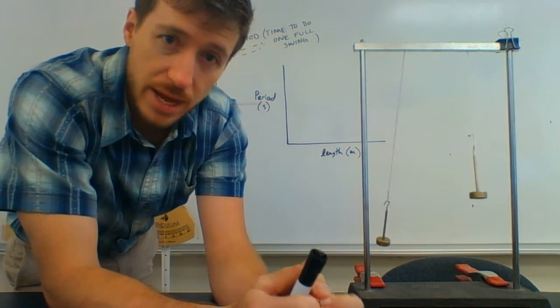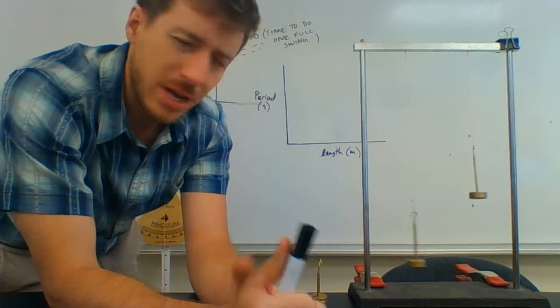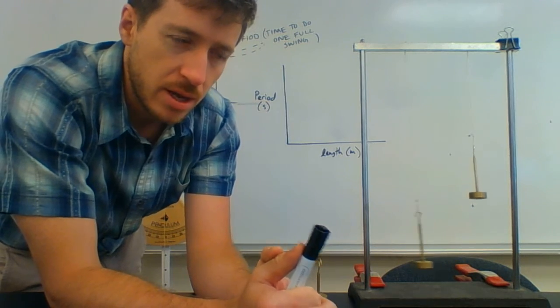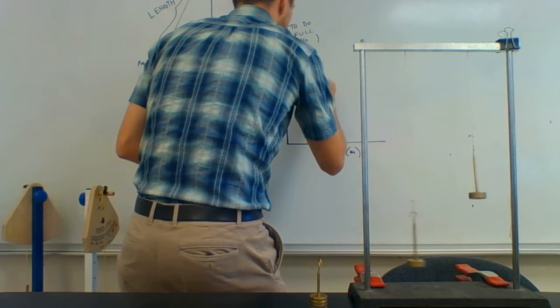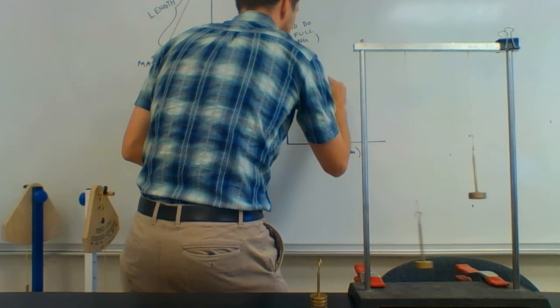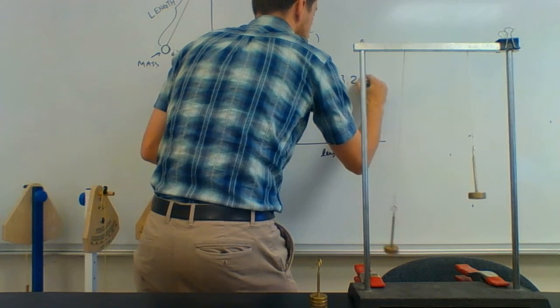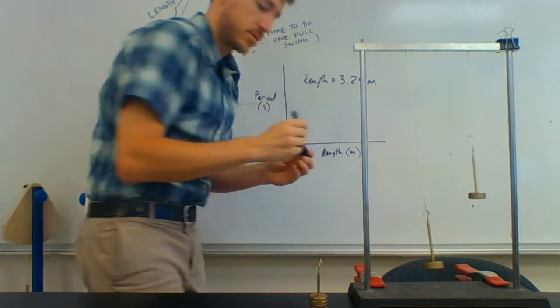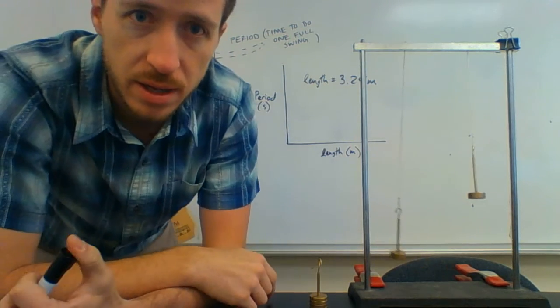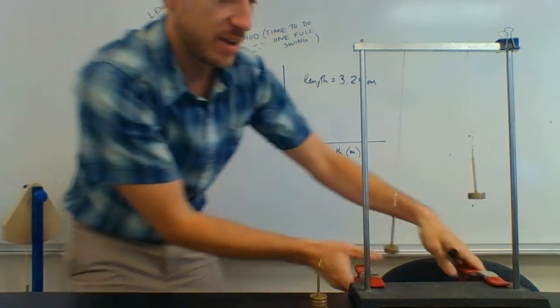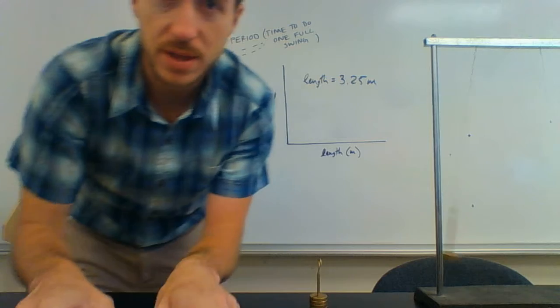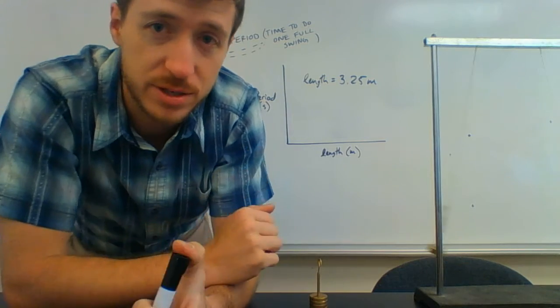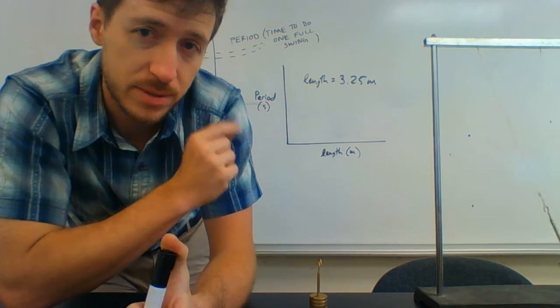And you're going to use that graph, that model, to make a prediction. In class on Tuesday, we're going to swing a pendulum that has a length of 3.25 meters, that's 325 centimeters. So you're going to use your model to make a prediction.